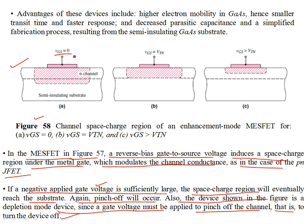Figure 58 shows the enhancement-mode MESFET. When VGS is zero (gate terminal open-circuited), there is no current between the source and drain contacts. A threshold voltage must be applied — when VGS equals threshold, the channel is at pinch-off. Applying VGS slightly above threshold reduces the Schottky barrier so current can flow from source to drain. In enhancement mode, VGS greater than threshold is where the transistor starts conducting.